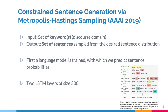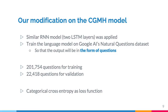We have referenced the approach of constraint sentence generation via Metropolis-Hastings Sampling, or CGMH, where we input a set of keywords in a discourse domain and get an output of a set of sentences sampled from the desired sentence distribution. The first step in this approach is training a language model where we predict probabilities of sentences that make sense, with two LSTM layers of size 300. After that, we made some modifications on the CGMH model, where a similar RNN model with two LSTM layers was applied, but the language model was trained on Google AI's Natural Questions dataset so that the output will be informed of questions.